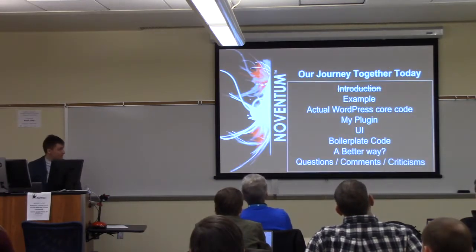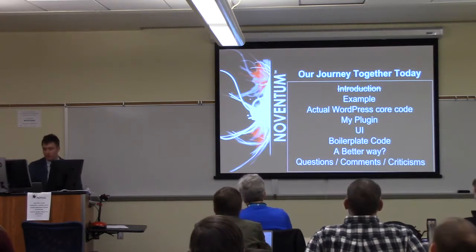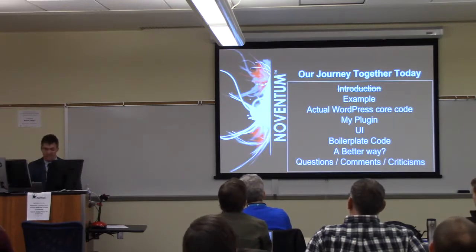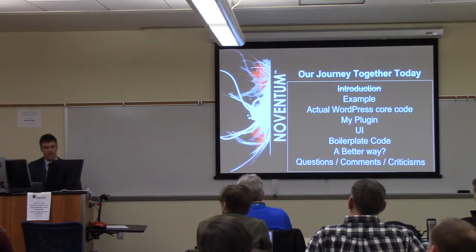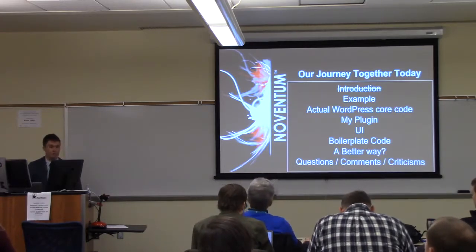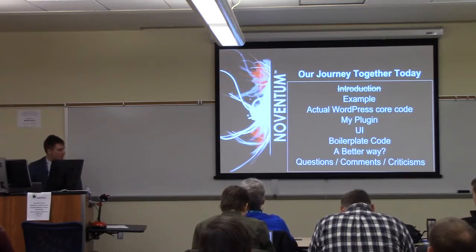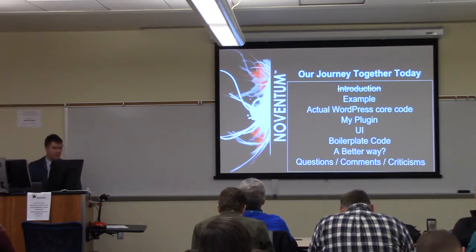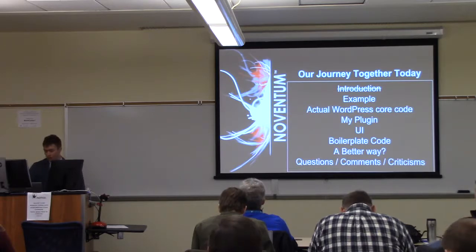So where are we going to go today? We've already done the introduction. I'll give you an example and we'll go over some code. In the general case, with things that I like about WordPress Core, we'll talk about my plugin, the UI considerations, and a lot of the boilerplate. There's a lot of code duplication and boilerplate, and I think there might be a better way to accomplish that. Then questions, comments, and criticisms at the end — if you have a clarifying question or something I said doesn't make sense, just raise your hand and I can go into it a little bit deeper.